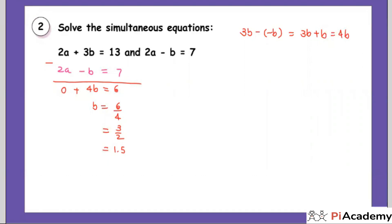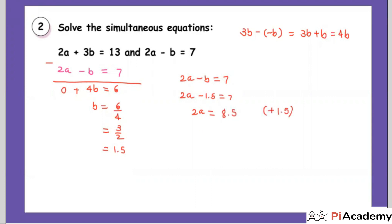Now substitute b equals 1.5 into 2a minus b equals 7. So 2a minus 1.5 equals 7. Adding 1.5 to both sides: 2a equals 8.5. Dividing by 2: a equals 4.25. So the answers are b equals 1.5 and a equals 4.25.